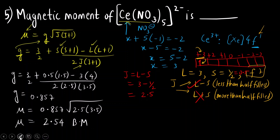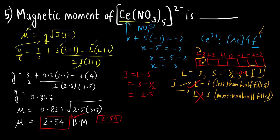The unit is Bohr magnetons, so the final answer is 2.54 Bohr magnetons. It was a NAT-type question, so you type 2.54 (to 2 decimal places). I will end this here and we will discuss more questions in the next video. Thank you so much.